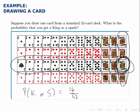And again the reason we had to subtract off the king of spades was that otherwise we would double count it when we added them up.